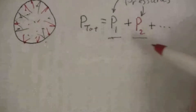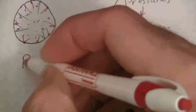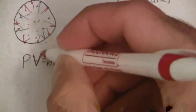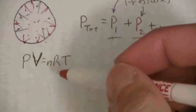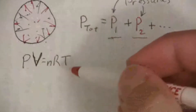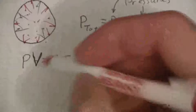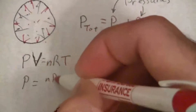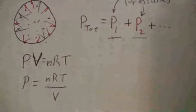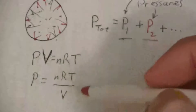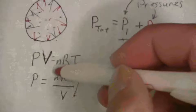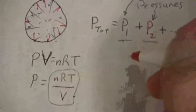We know that the gas law PV = NRT gives us pressure times volume. If we solve for P by dividing both sides by V, we get P = NRT/V. So we can rewrite each of these partial pressures as NRT over V.